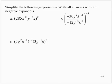Simplify the following expressions. Write all answers without negative exponents. Exercise A has 285x to the 43rd y to the negative 8th z to the 0 power.